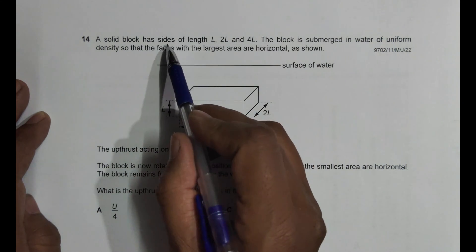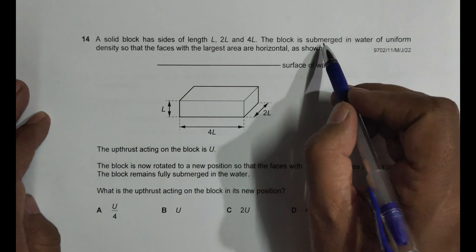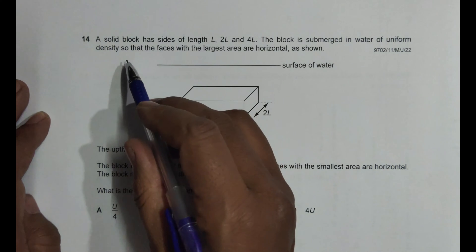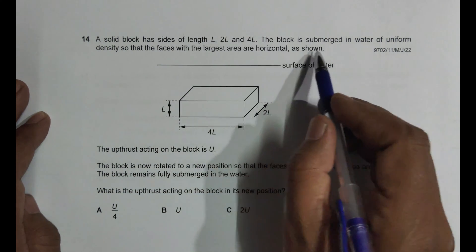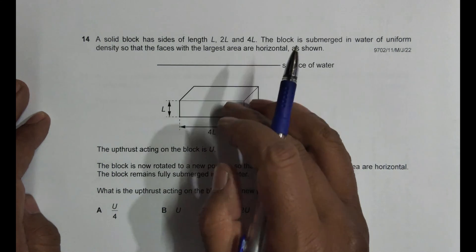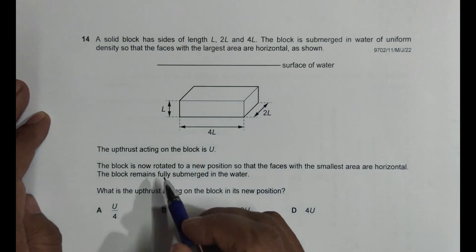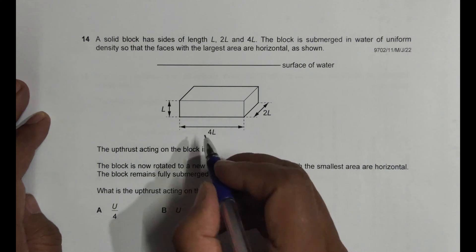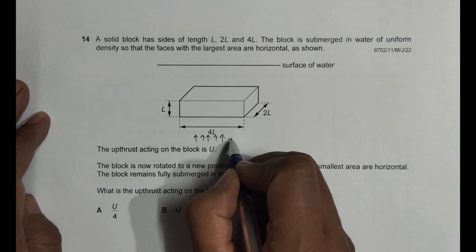A solid block has sides of length L, 2L, and 4L. The block is submerged in water of uniform density so that the faces with the largest area are horizontal. This is the surface - it is fully submerged inside water. The upthrust acting on the block is U.